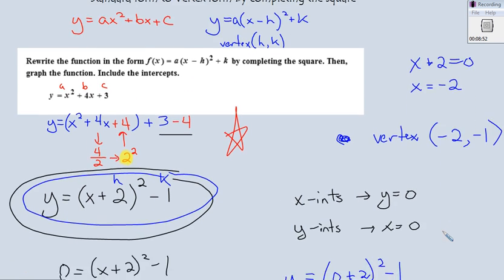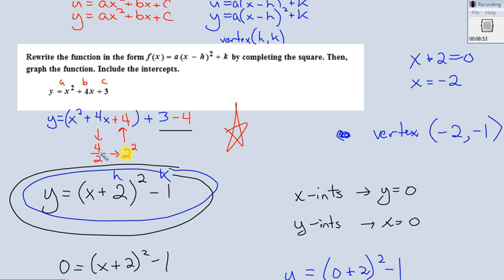That was a problem taking something from standard form to vertex form by completing the square. The completing the square part was this part right here where we half the b, square it, put it back, and that's where we get our equation from, completing the square.